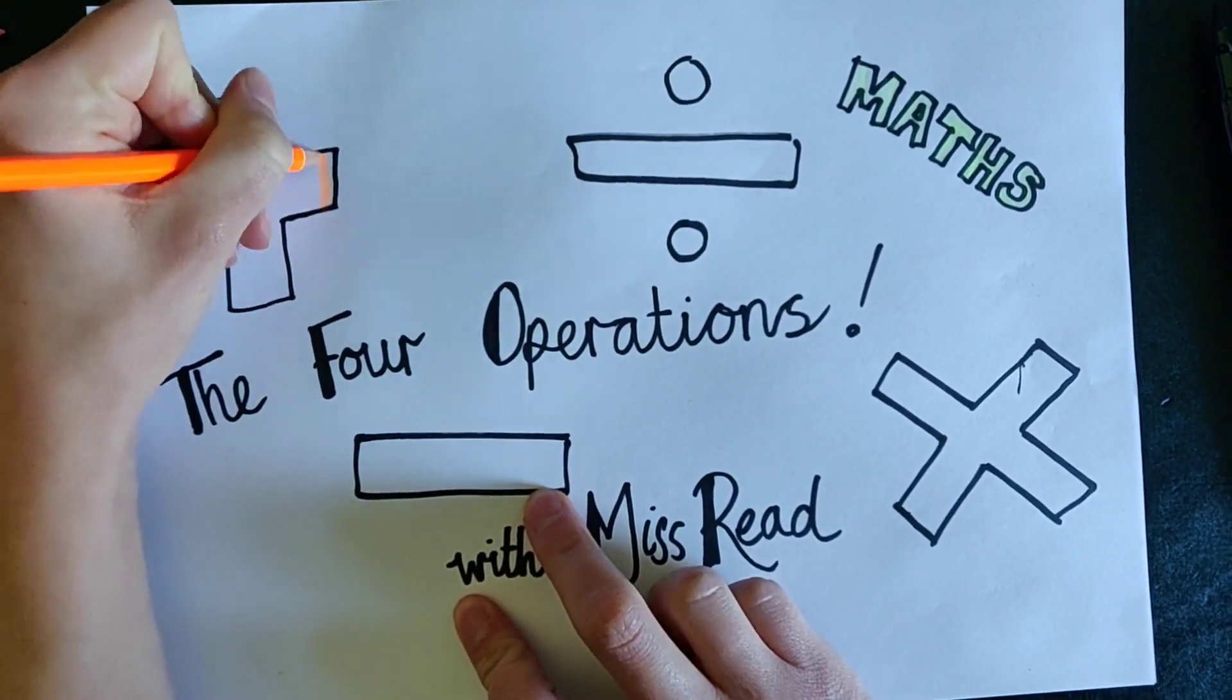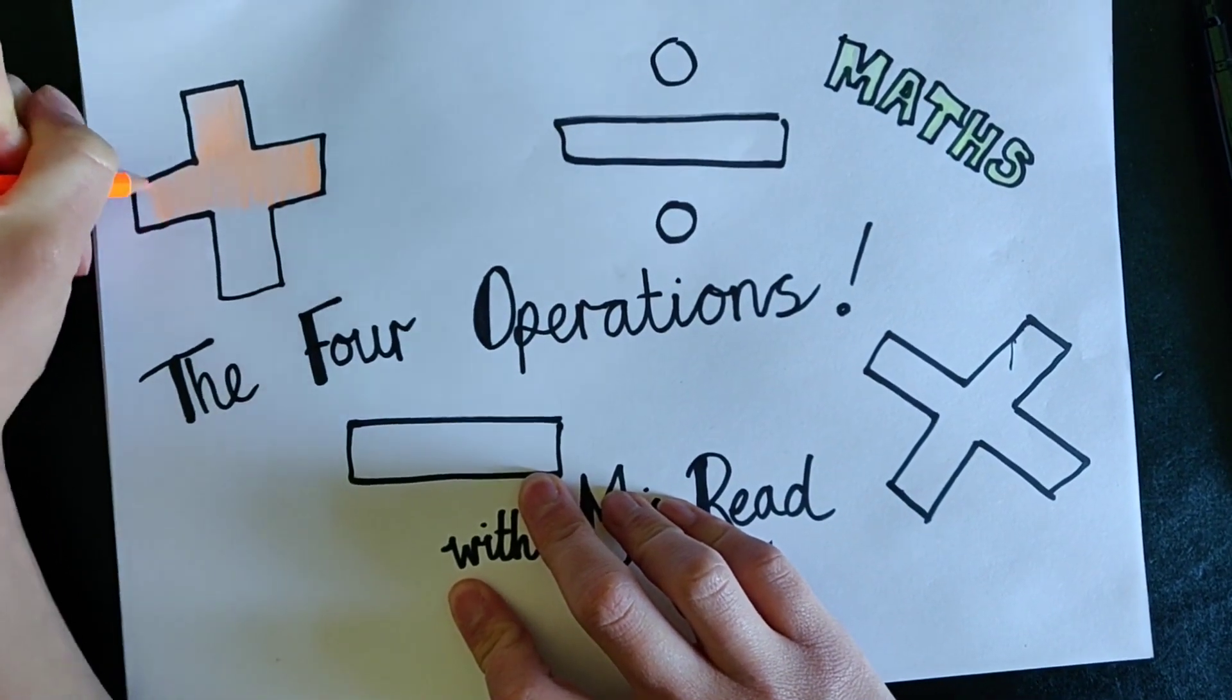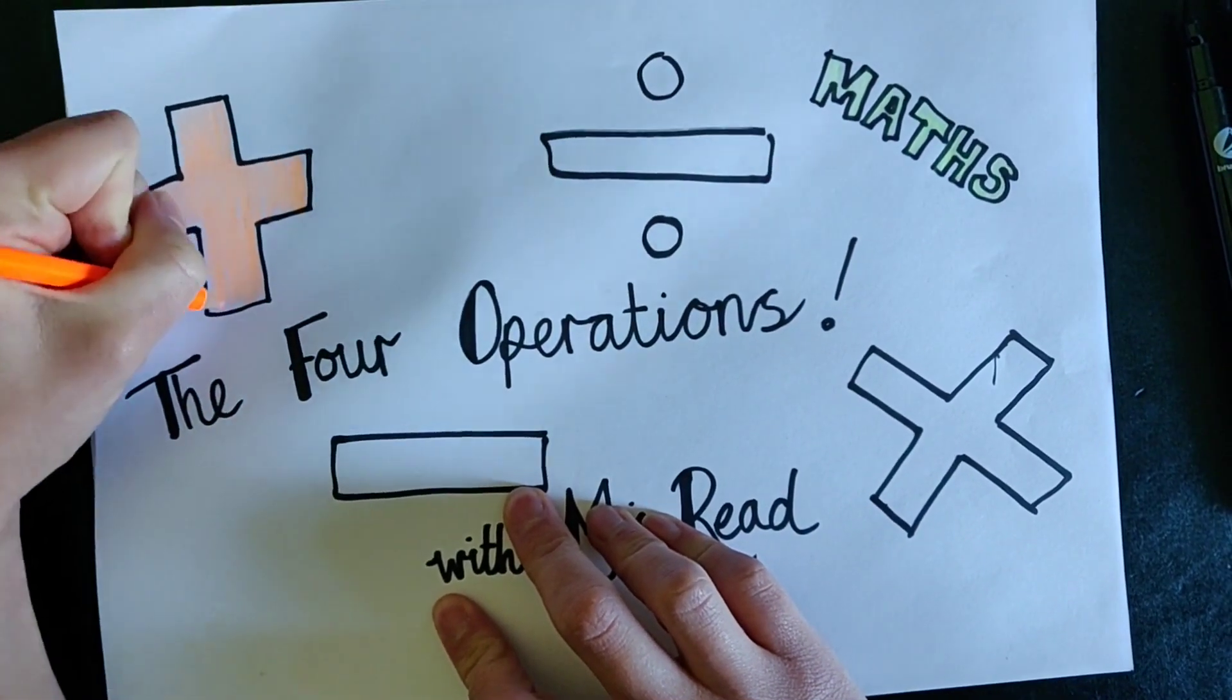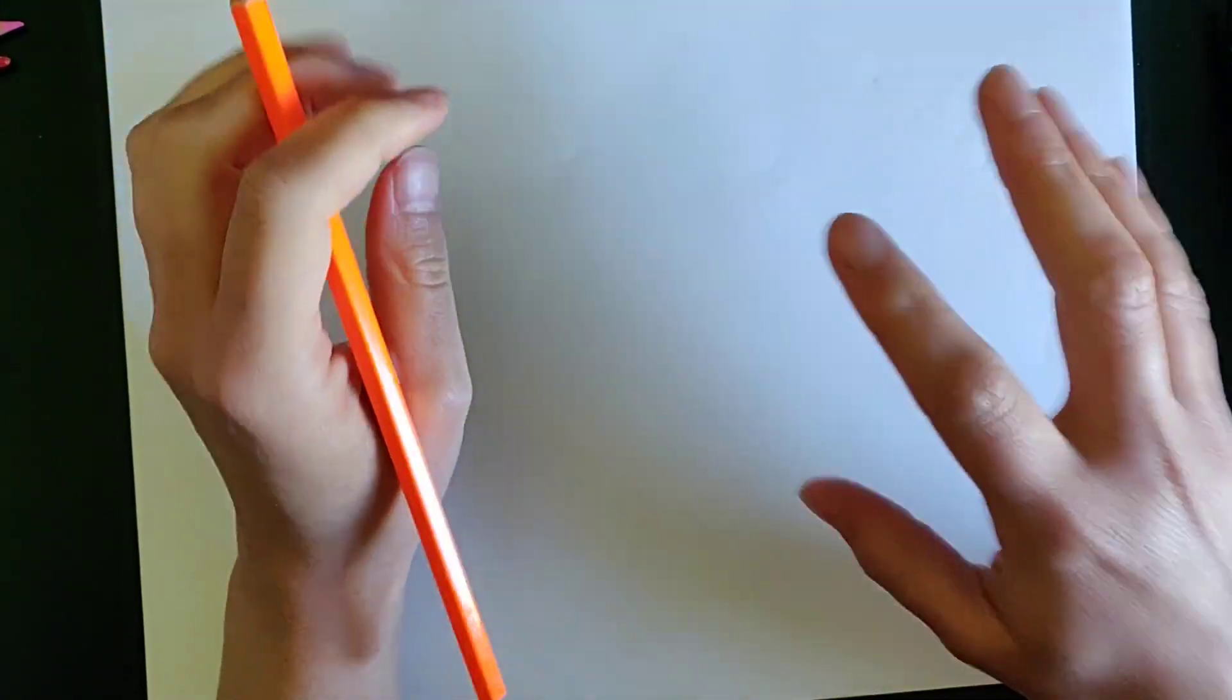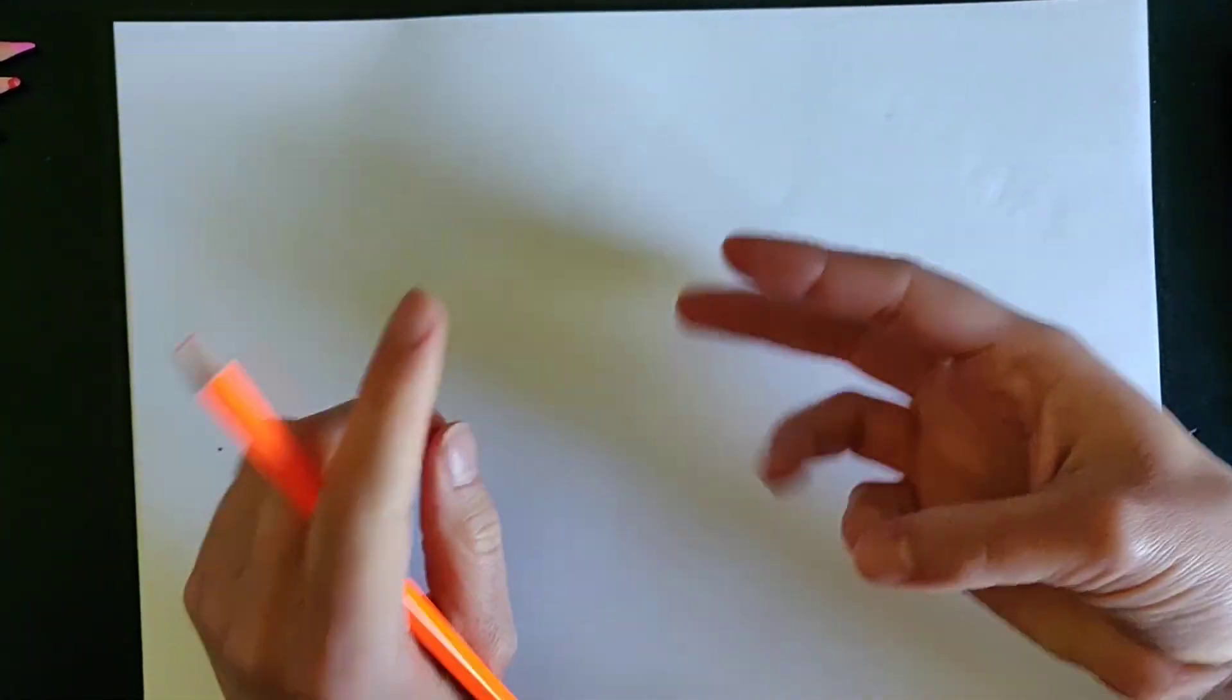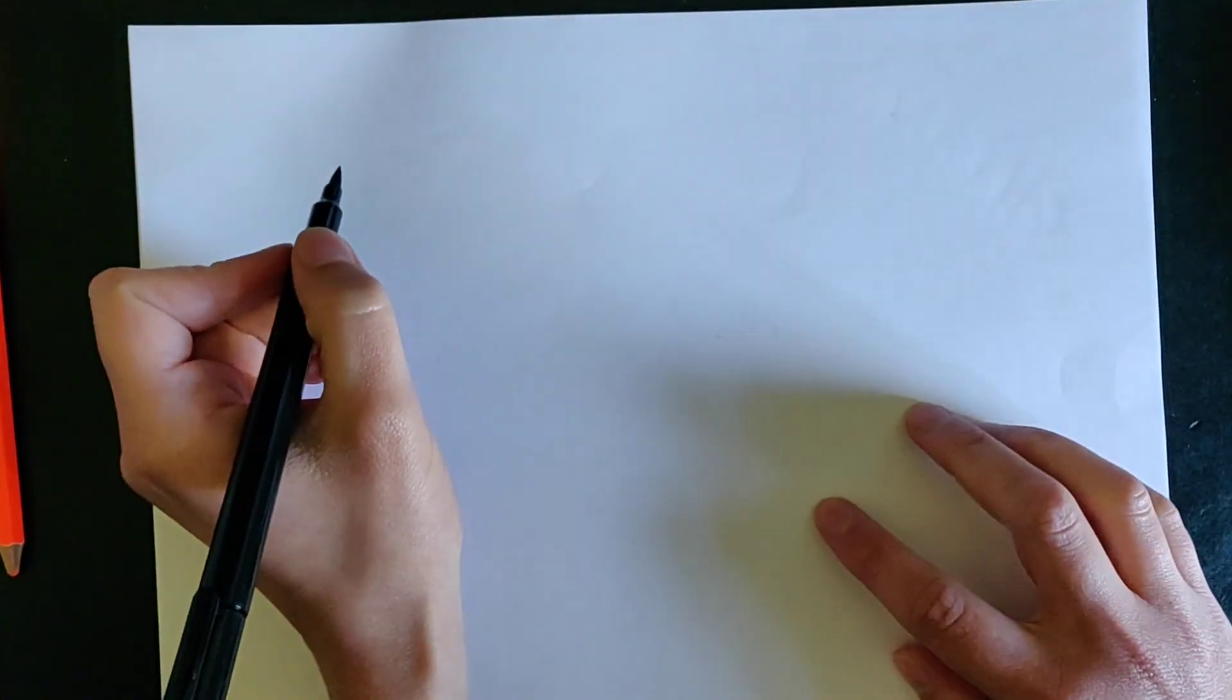Today we are going to be looking at the most efficient ways of doing addition. Now these ways will be different for all of you but these ones are the ones that we use in school all the time and we find the easiest to use to help us when we're doing our learning. Efficient means it's quick and easy and we get to the answer in the most sensible way. So we're going to do our best to do some efficient addition today.